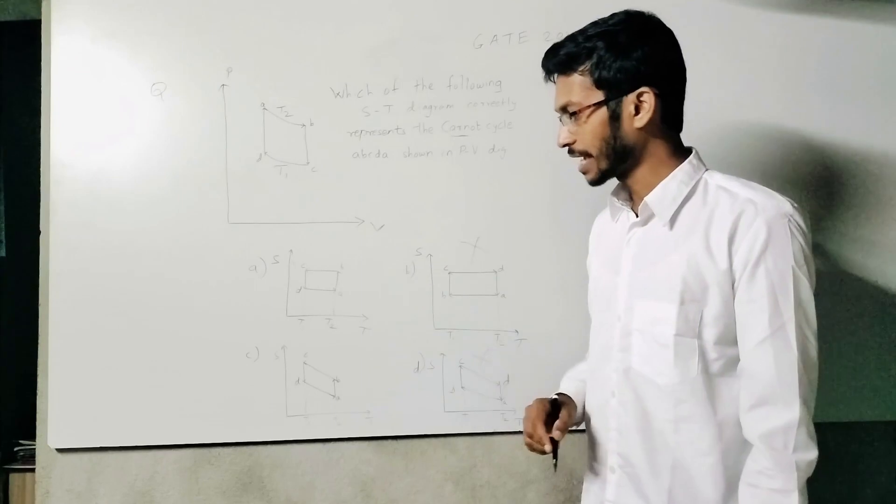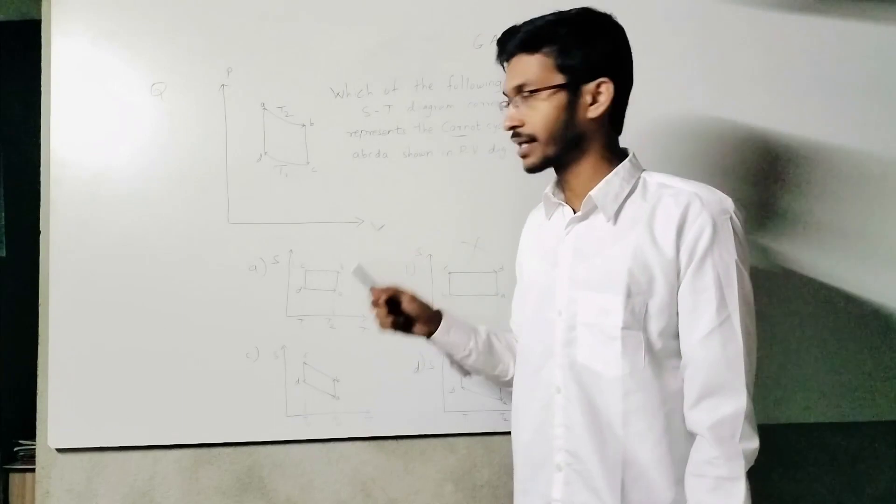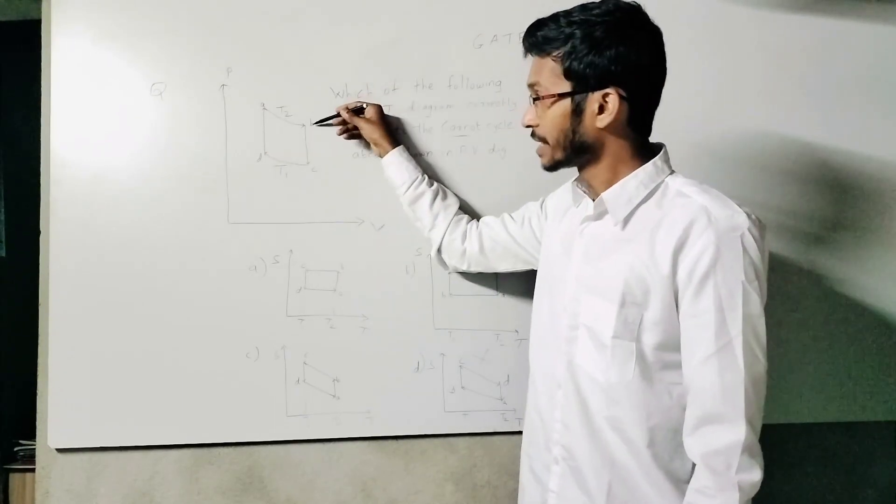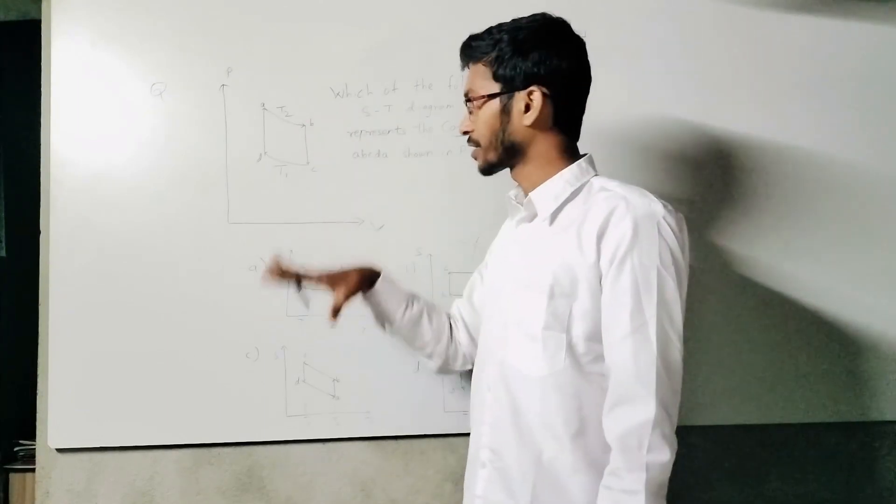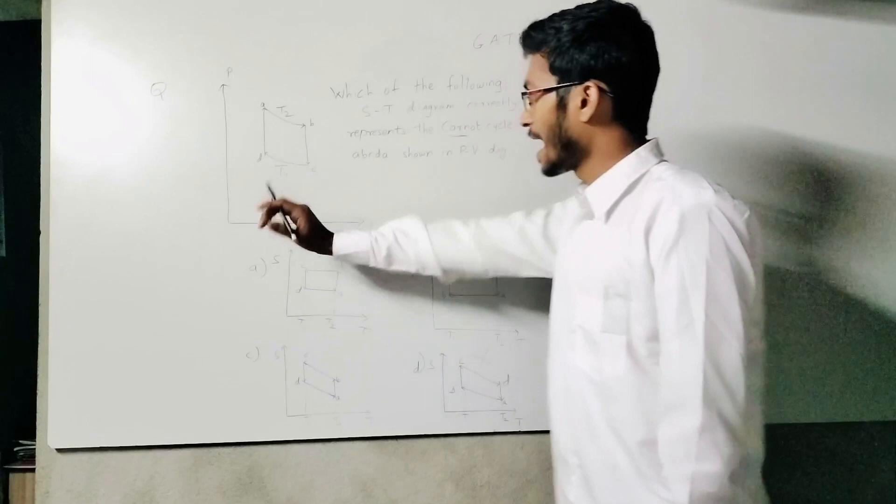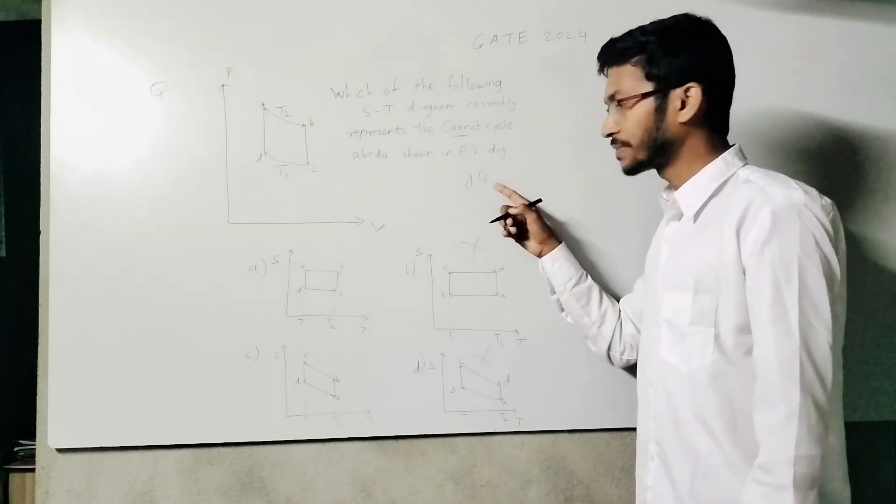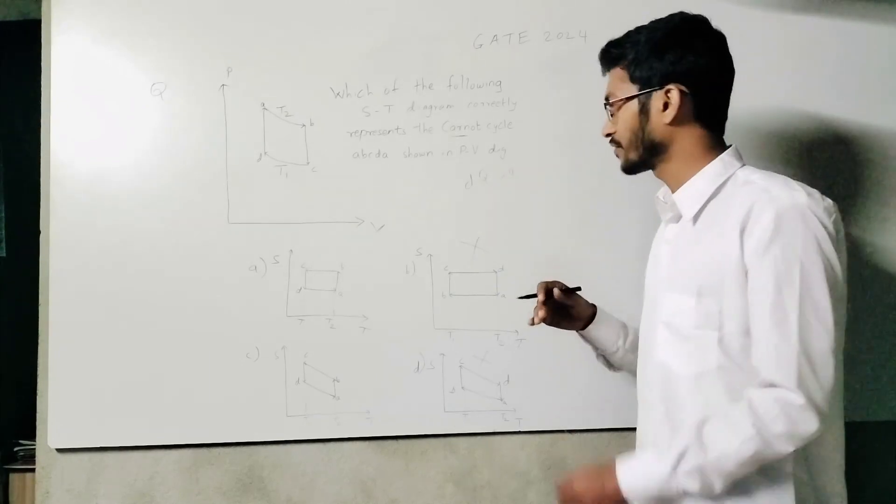Because it's a Carnot cycle and AB is an isotherm, BC must be adiabatic. An adiabatic process means change in temperature—sorry, adiabatic process means DQ equals zero, that is, the change in heat transfer is zero.